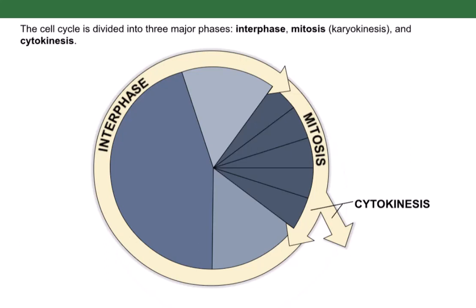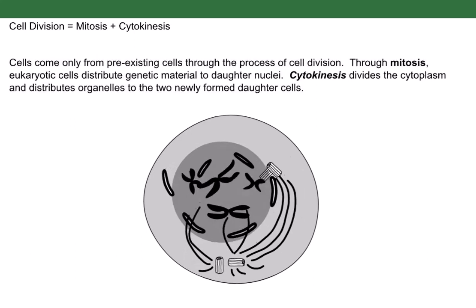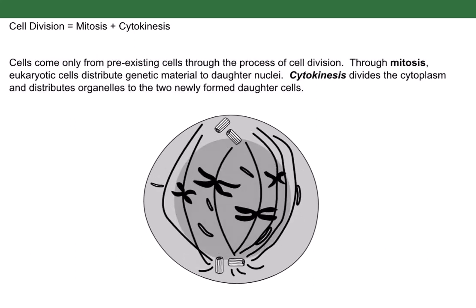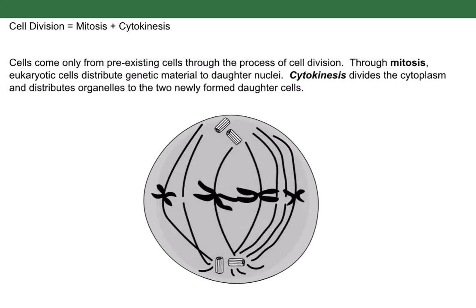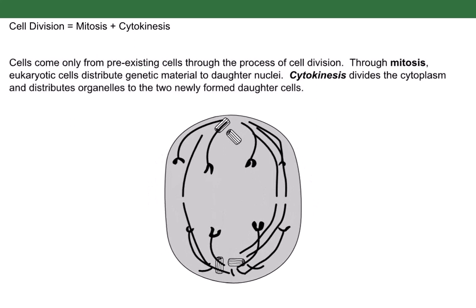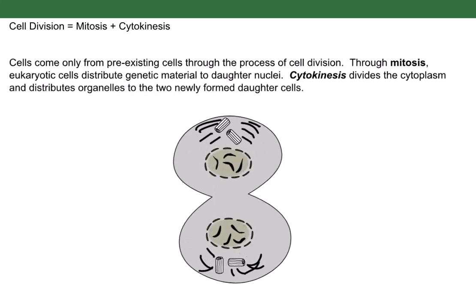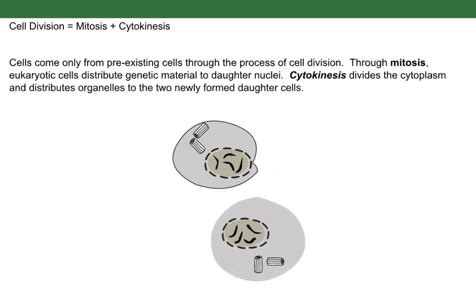Cells come only from pre-existing cells through the process of cell division. Through mitosis, eukaryotic cells distribute genetic material to daughter nuclei. Cytokinesis divides the cytoplasm and distributes organelles to the two newly formed daughter cells.